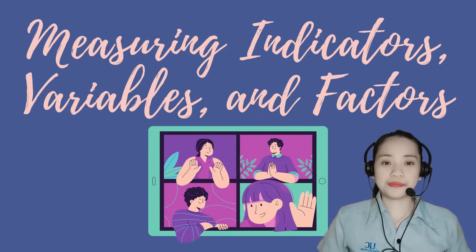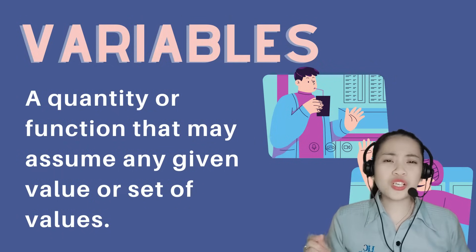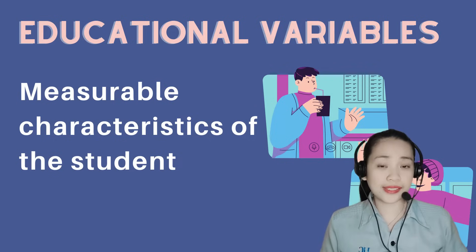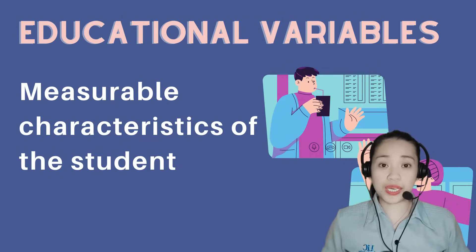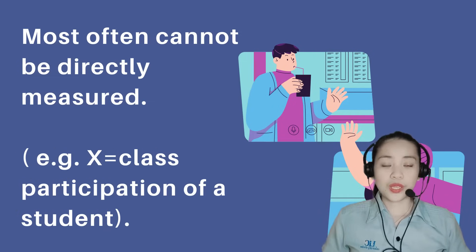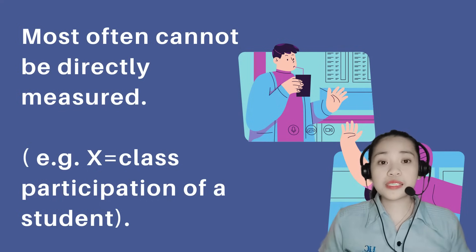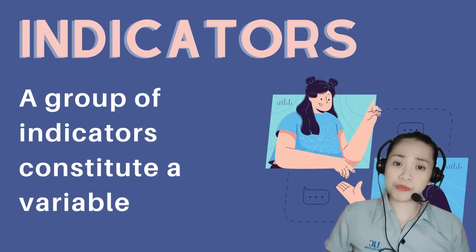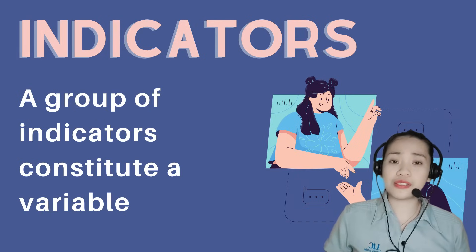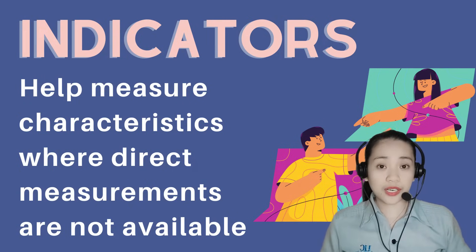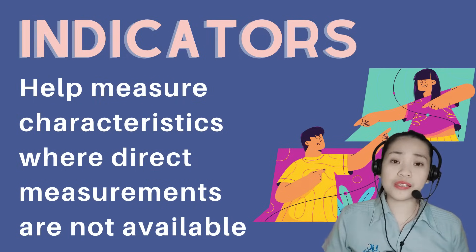Let's move on to indicators, variables, and factors. A variable is a quantity or function that may assume any given value or set of values. An educational variable, denoted by an English alphabet like X, is a measurable characteristic of a student. It may be directly measurable — for example, the age or height of a student — but most often cannot be directly measured, for example, class participation. Indicators are the building blocks of educational measurement upon which all other forms of measurement are built. A group of indicators constitutes a variable, and they were introduced when direct measurements are not available. An indicator, or I, denotes the presence or absence of a measured characteristic.